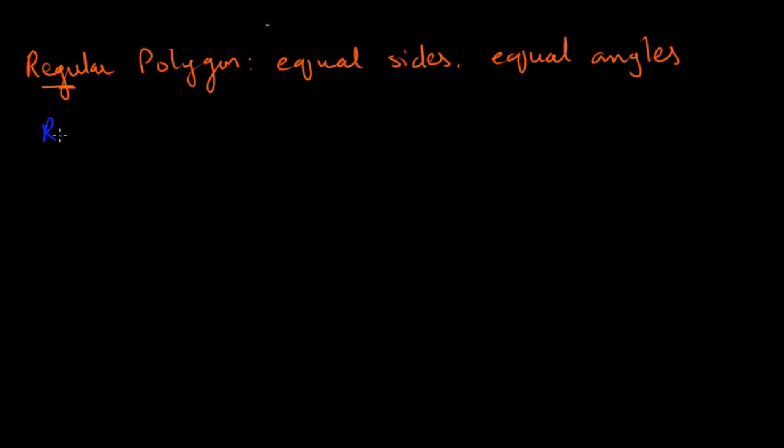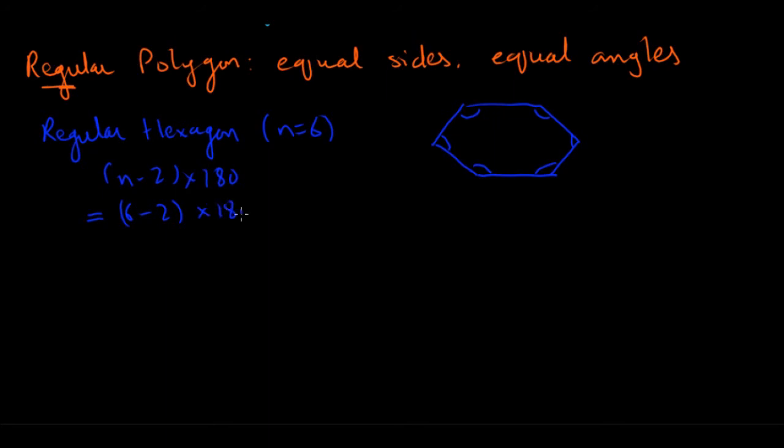Let's say we have a regular hexagon, with n = 6. It looks like a honeycomb cell. Since it's regular, all six sides are equal in length, and all six angles are equal. From the formula (n - 2) × 180, the sum of all angles inside a hexagon is (6 - 2) × 180 = 4 × 180 = 720°.